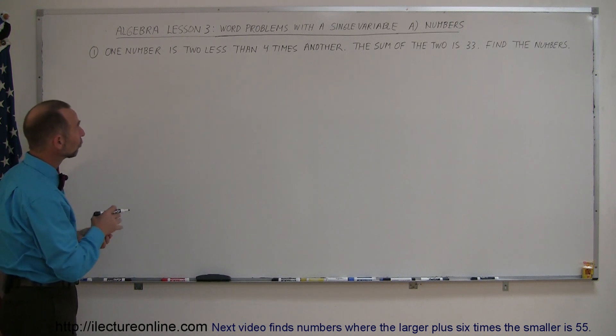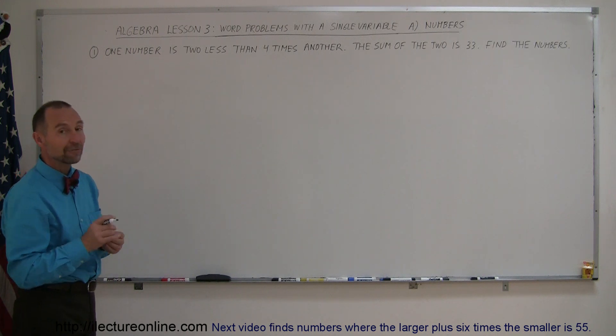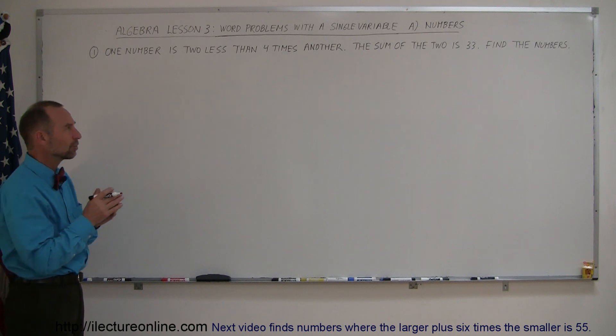We have one number is two less than four times another number. The sum of the two is 33. Find the numbers. So we're dealing with two numbers here.